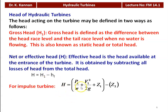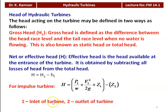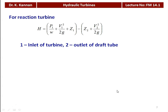For an impulse turbine, H = P1/W + V1²/2g + Z1 − Z2, where 1 is the inlet and 2 is the outlet of the turbine; P1/W is the pressure head, V1²/2g is the velocity head, and Z1 and Z2 are datum heads. For a reaction turbine, H = P1/W + V1²/2g + Z1 − Z2 + V2²/2g, where 2 is the outlet of the draft tube.